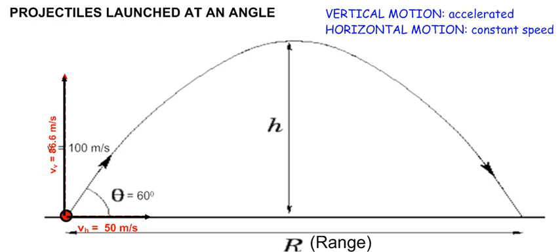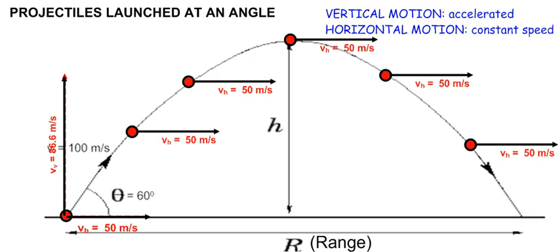The horizontal motion remains at constant speed because there are no forces acting along the horizontal to either speed up or slow down that part of the velocity. It therefore remains at a constant velocity of 50 m per second throughout the whole path, and it will hit the ground with 50 m per second along the horizontal.